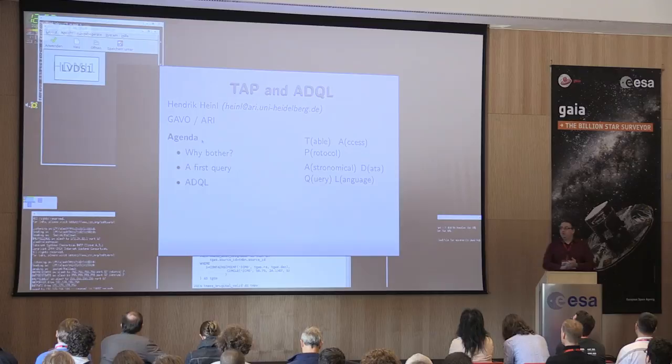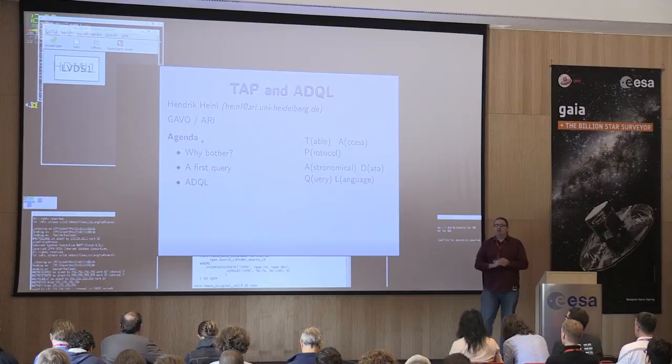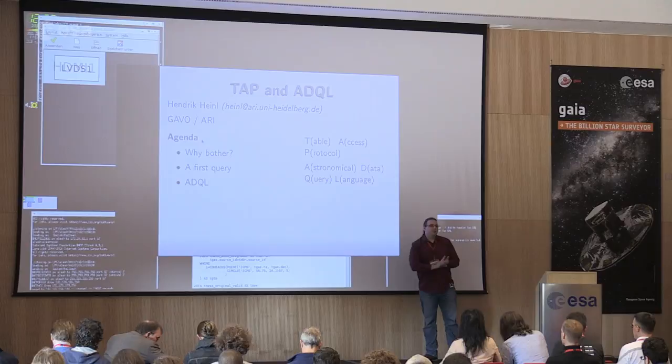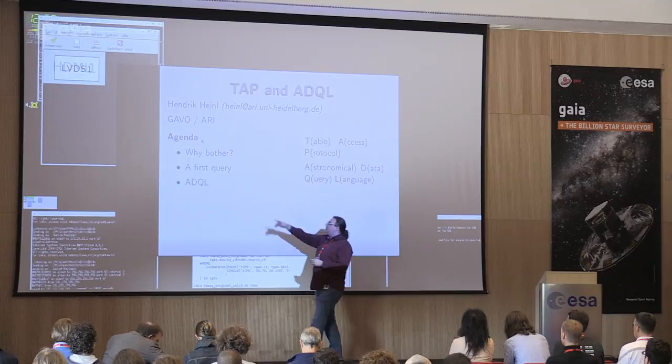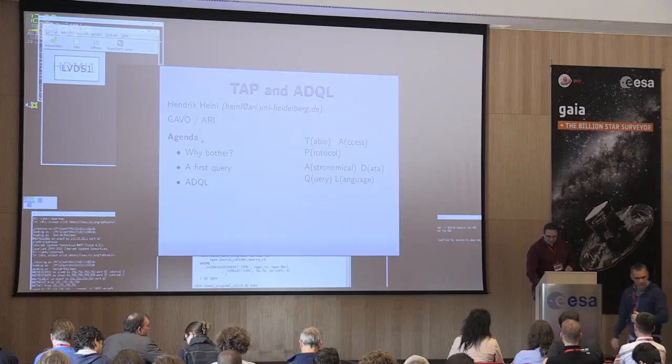What I want to talk about now is TAP and ADQL. TAP is the Table Access Protocol, which is designed to access table data, especially in astronomy. You use the Astronomical Data Query Language to access tables or catalog data. The talk will have three parts: first, why bother at all; second, a first query; and third, an example of how ADQL works.